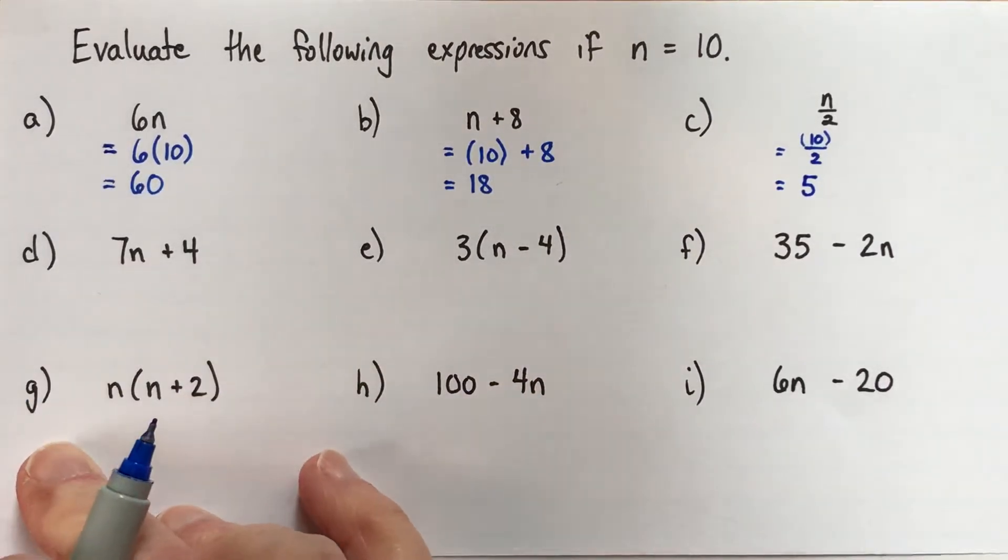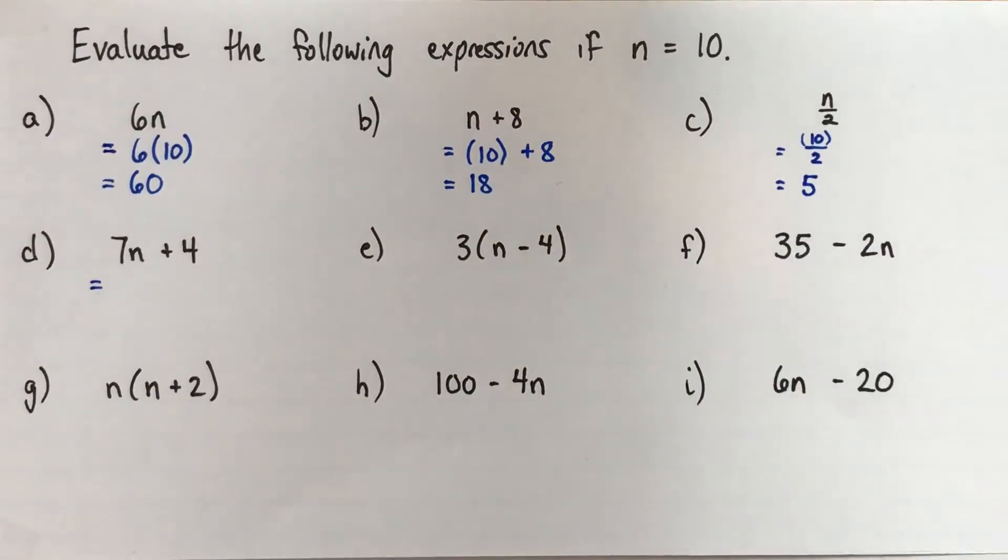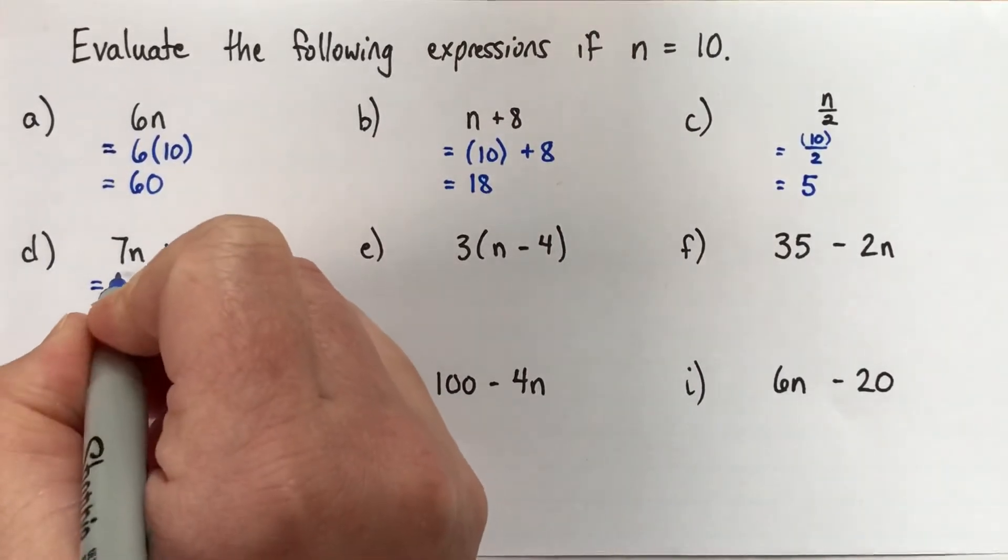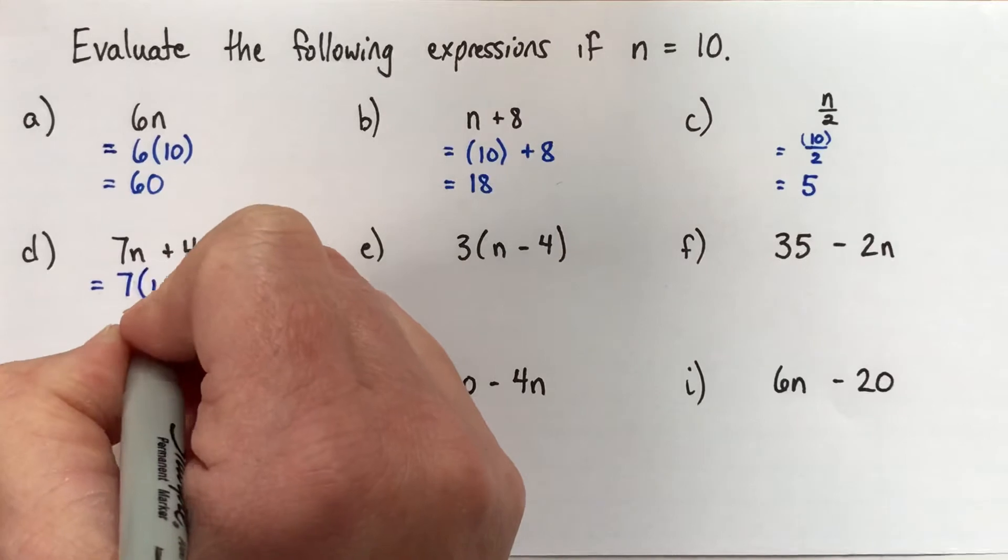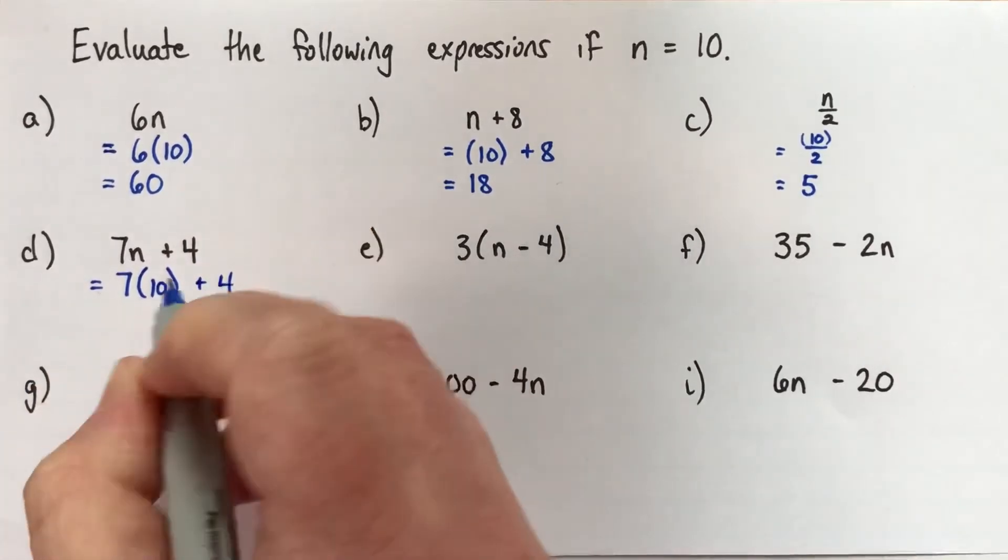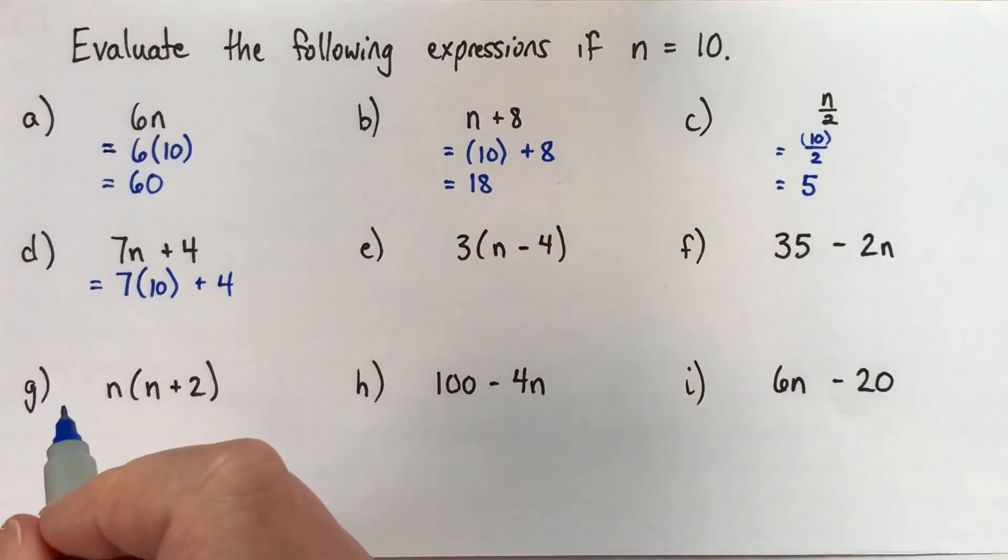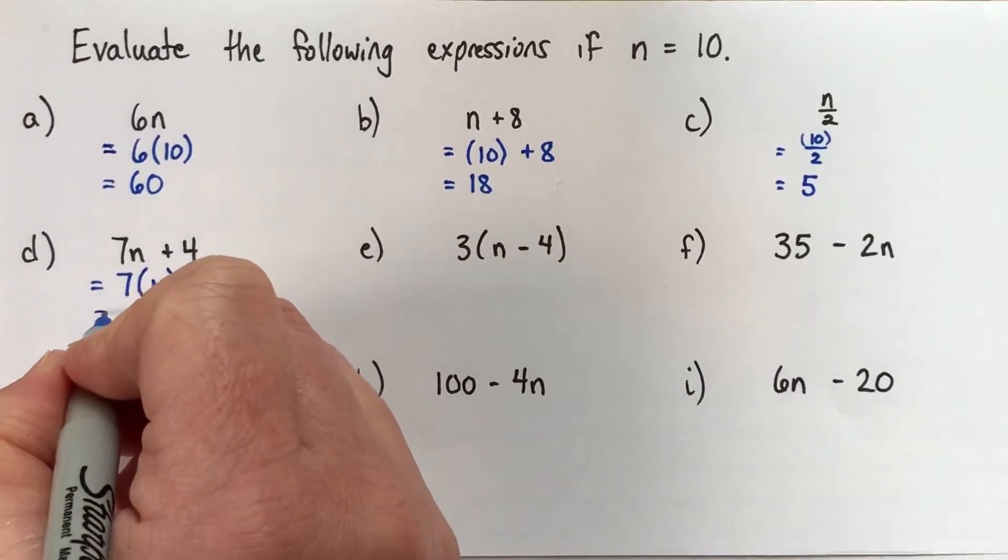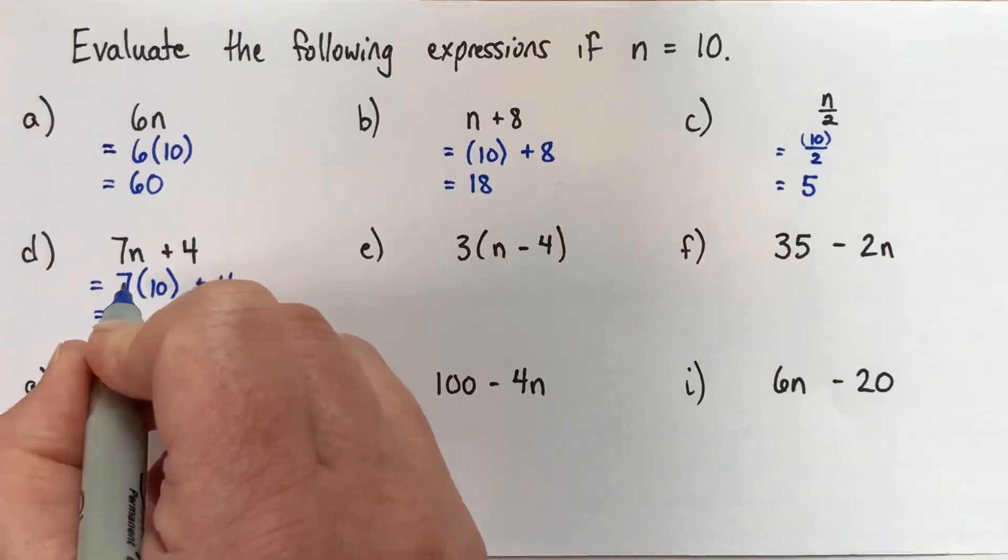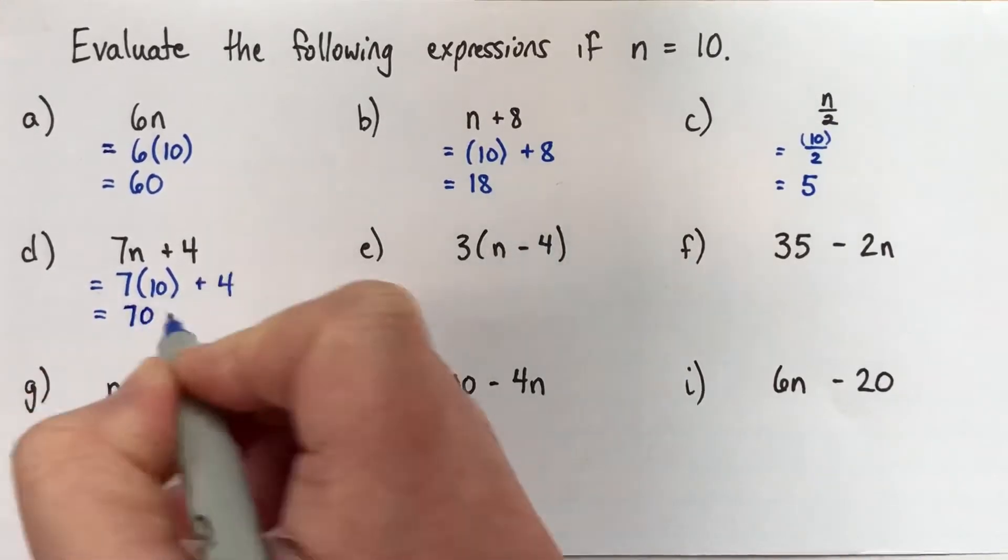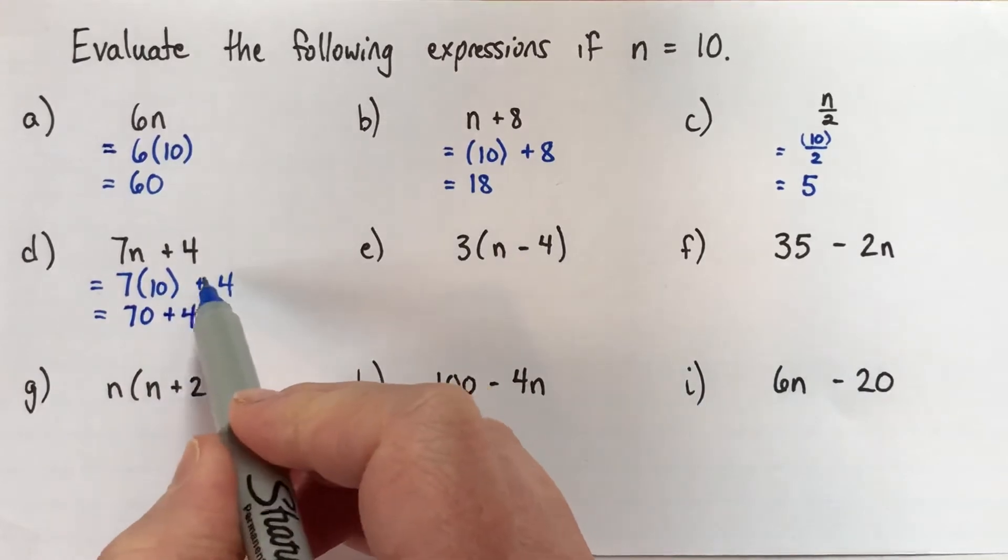Alright, here, now we've got an extra operation in these. These ones each had just one operation, and the rest of them have 2. So we're going to replace. 7n plus 4, we'll replace our n with 10. And here, if you don't write the brackets, it'll look like 710, which it isn't at all. So you really want to put those brackets in there. If you'd like to also write a multiplication sign, a little x, go right ahead. Make sure it's small enough that it doesn't look like a variable x, but feel free to put a little times in there if you want. Alright, and now I think it's probably important to show both steps here, even though you may well be able to do this in your head. 7 times 10 is 70.